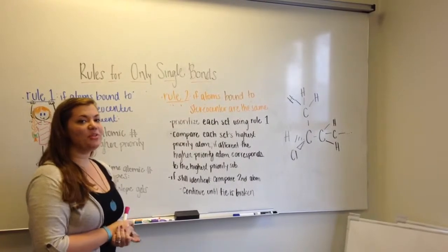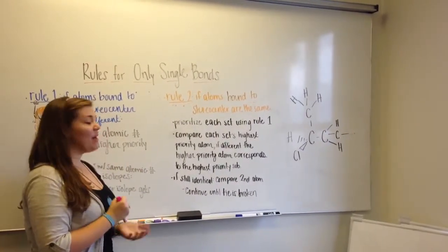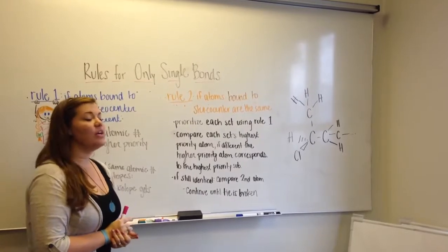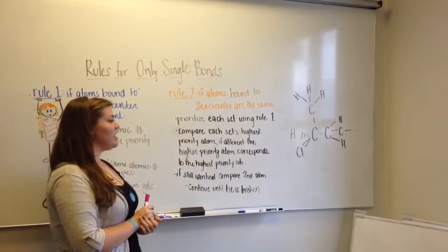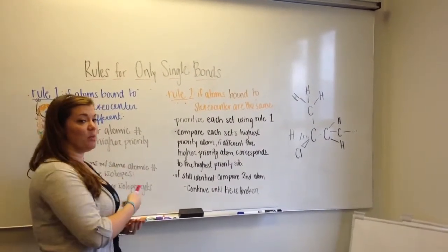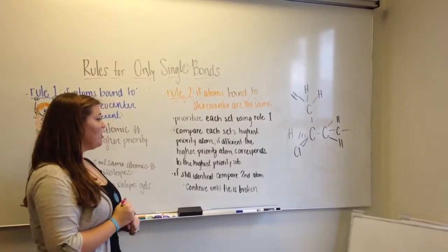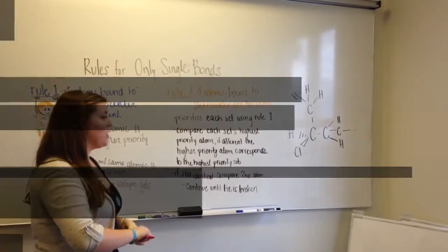Now we're going to look at rule two. In rule two, we're looking at a case where the atoms bound to the stereo center are the same. You start off by prioritizing each set based on rule number one that we just talked about. Then you move on and compare each set's highest priority atom.